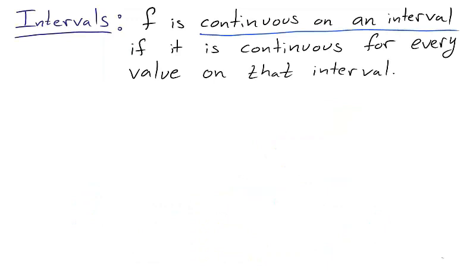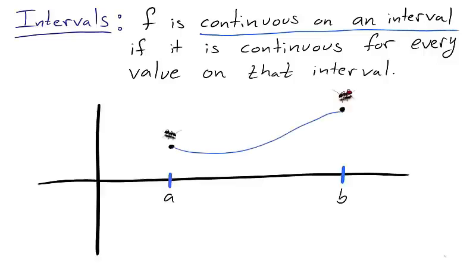Usually we are interested in continuity at more than a single point. We say that a function is continuous on an interval if it is continuous for every point in the interval. Visually a function is continuous on an interval from a to b if the curve is unbroken. That is, if an ant were to crawl along the function dragging a pen behind itself, it would trace out the entire graph of the function on the interval.